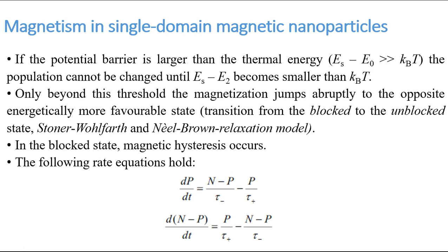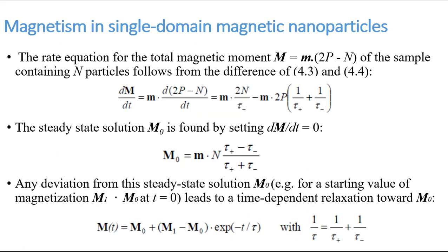For the change in spin-down particles with time, the rate equation is P over tau-plus minus N-minus-P over tau-minus. We have to understand these rate equations to see how the population is changing with time. The rate equation for the total magnetic moment M equals small m, the magnetic moment of each particle, multiplied by 2P minus N.